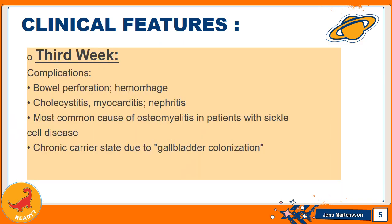In the third week, complications start: bowel perforation, hemorrhage due to ulcerated Peyer's patches, cholecystitis, myocarditis, nephritis, meningitis, and pneumonia. Notably, the most common cause of osteomyelitis in patients with sickle cell disease is Salmonella typhi infection.